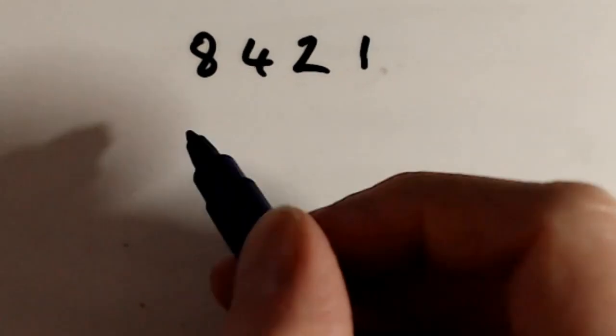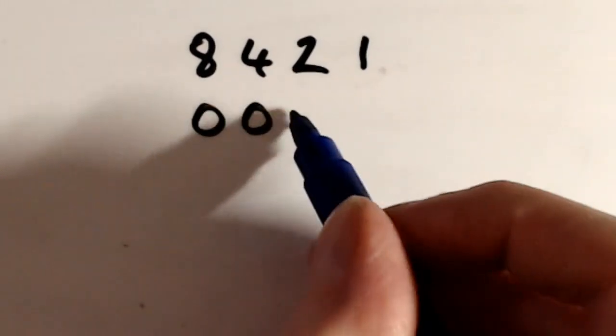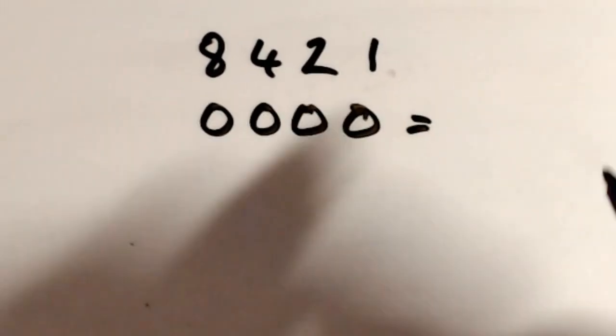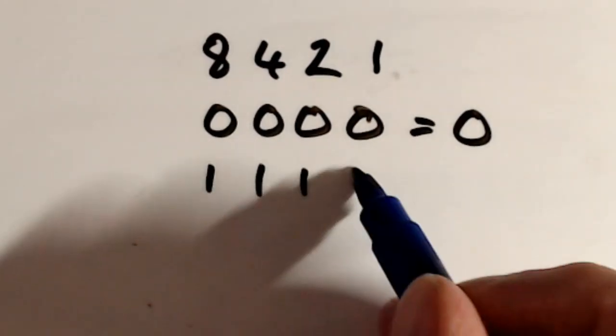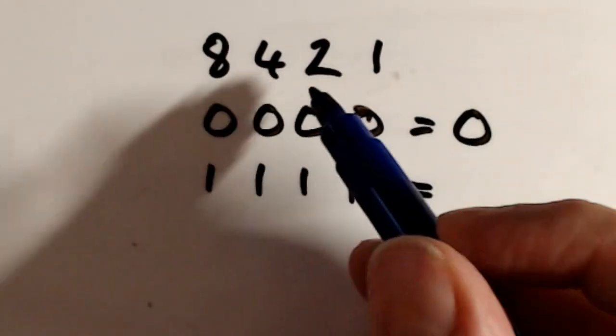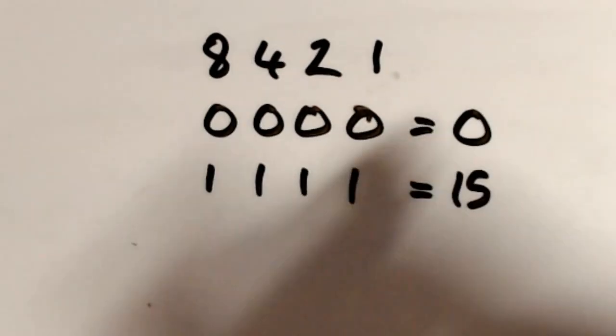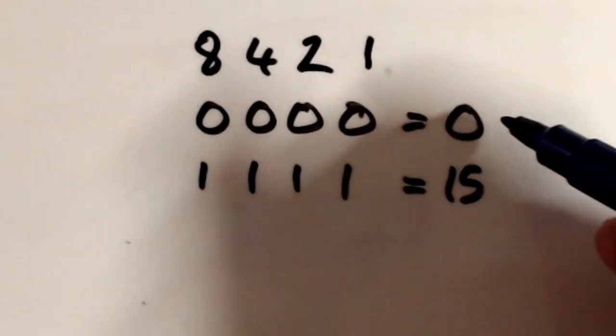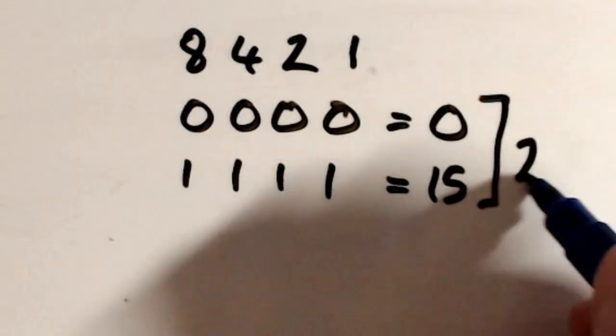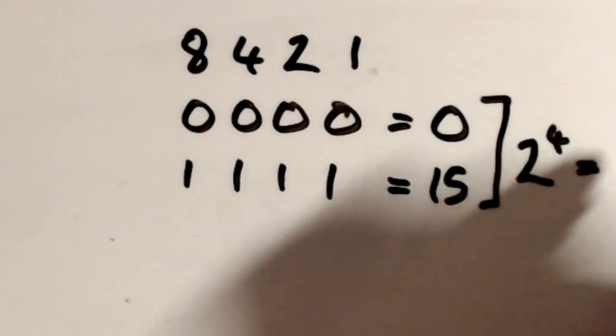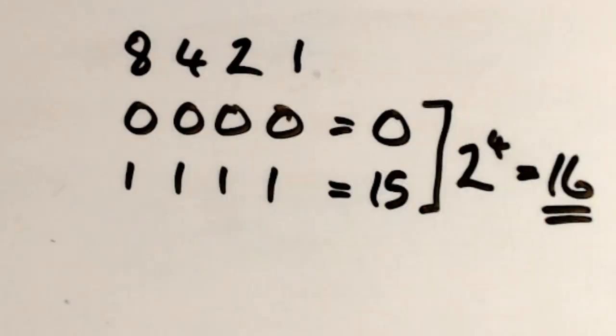So you'd have worked out the range to say well if it's 4 zeros that gives you 0, and if it's 4 ones you would add these together 8 plus 4 plus 2 plus 1 and that's 15. So that's a range from between 0 to 15, and that represented 2 to the power of 4, that represented 16 different numbers.